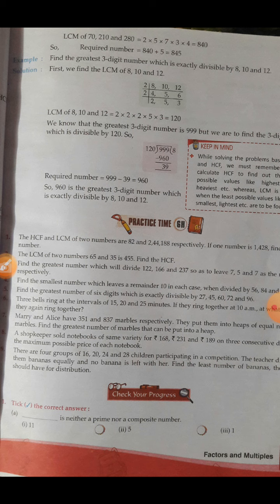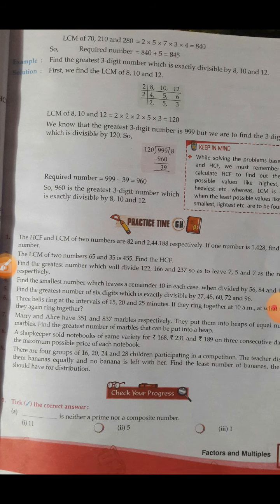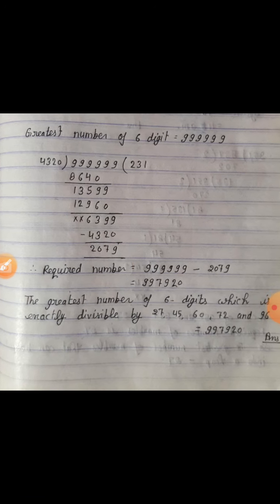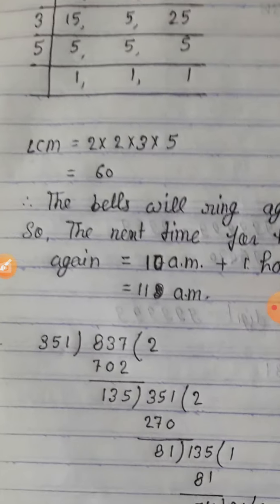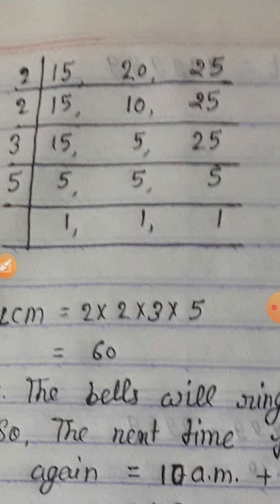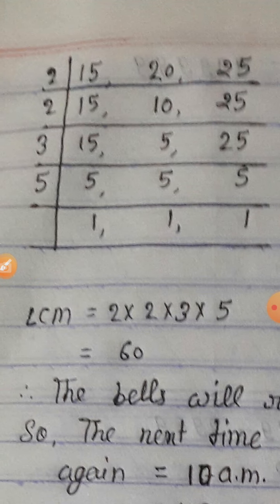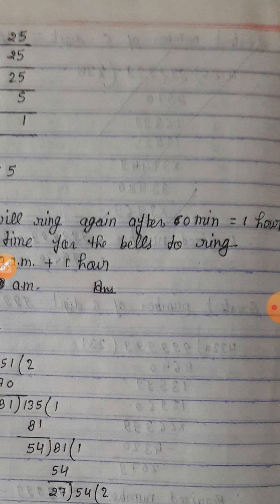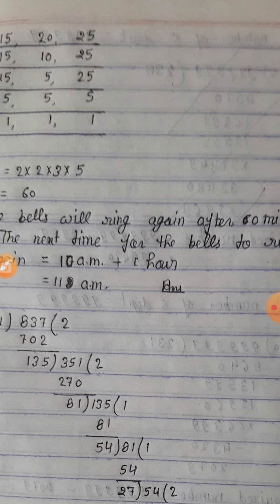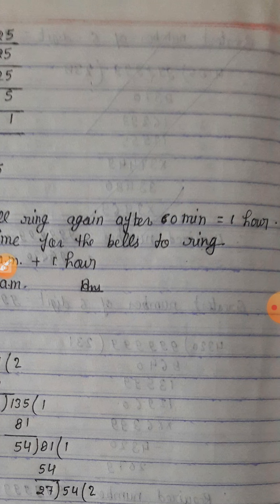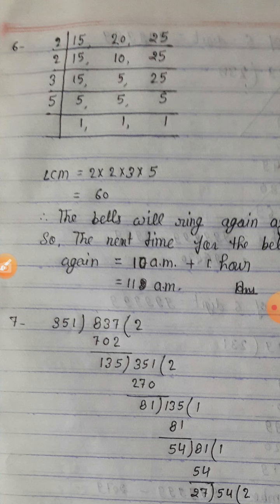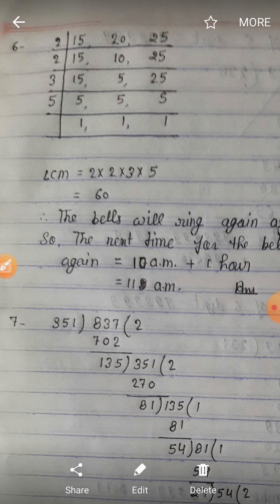LCM of 15, 20, 25 = 60 minutes = 1 hour. The bells will ring again after 60 minutes. Since they first rang at 10 a.m., the next time they will ring together is at 11 a.m.